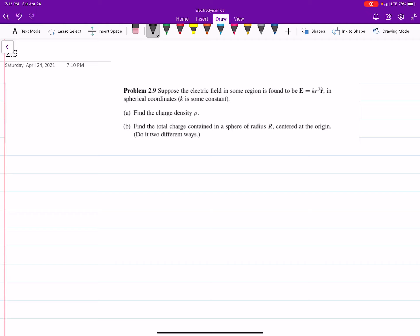This is problem 2.9 out of Griffiths. It says suppose the electric field found in some region is E equals kr cubed r-hat in spherical coordinates, where k is some constant.